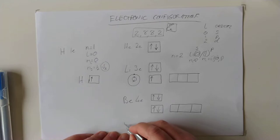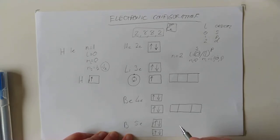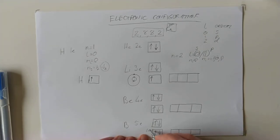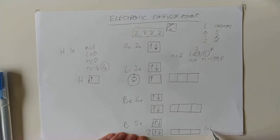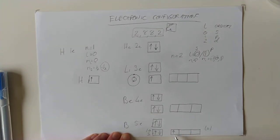Boron has five electrons. Two go into the 1s, two into the 2s, and now we need to start filling electrons into the p orbitals — the second energy level. The 2s orbital has l = 0, that's why it's an s orbital. These p orbitals have l = 1, which is possible because we're now at N = 2 and l can go from 0 up to N minus 1. The three p orbitals are given subscripts px, py, and pz — because they lie on the x, y, and z axes, as you will see very shortly.